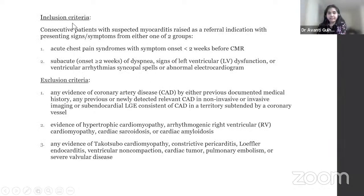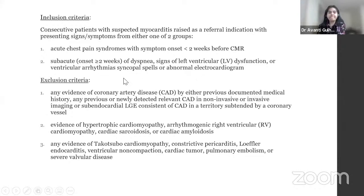Inclusion criteria were suspected myocarditis with signs and symptoms of either acute chest pain syndrome with onset less than two weeks before cardiac MR, or subacute onset of dyspnea, LV dysfunction, ventricular arrhythmias, or abnormal ECG. Exclusion criteria included coronary artery disease or other non-ischemic cardiomyopathies such as HCM, ARVC, sarcoid amyloidosis, subocardial cardiomyopathy, constrictive pericarditis, and so on.